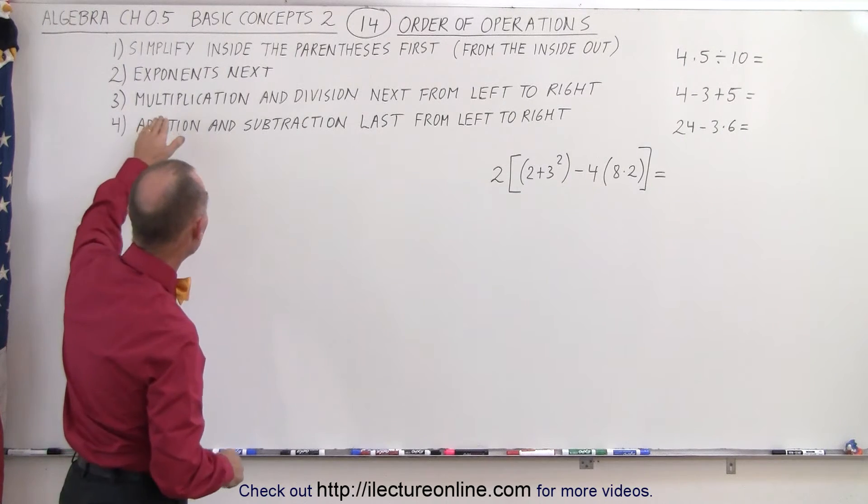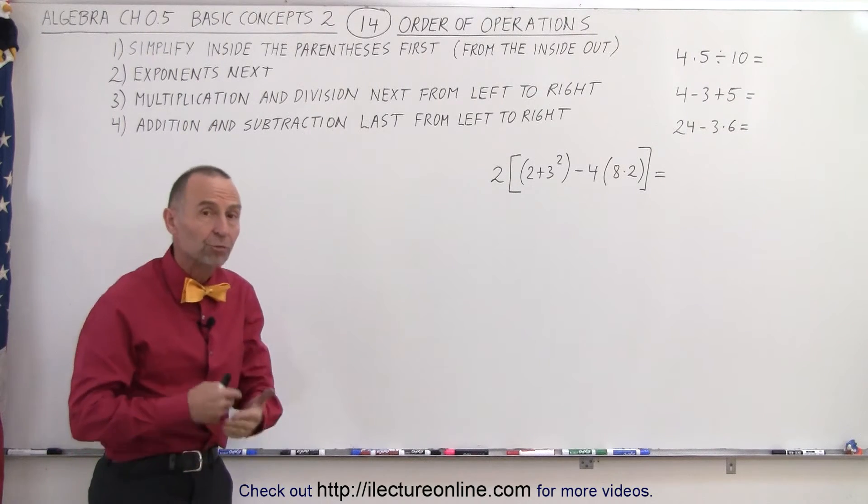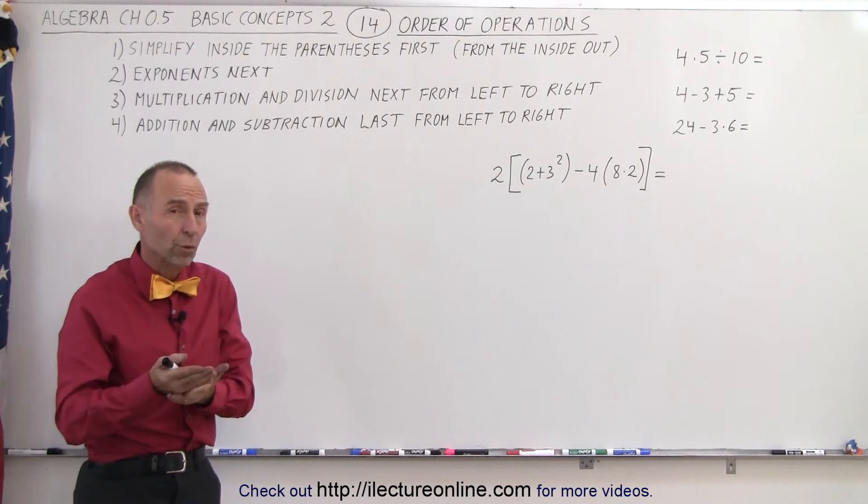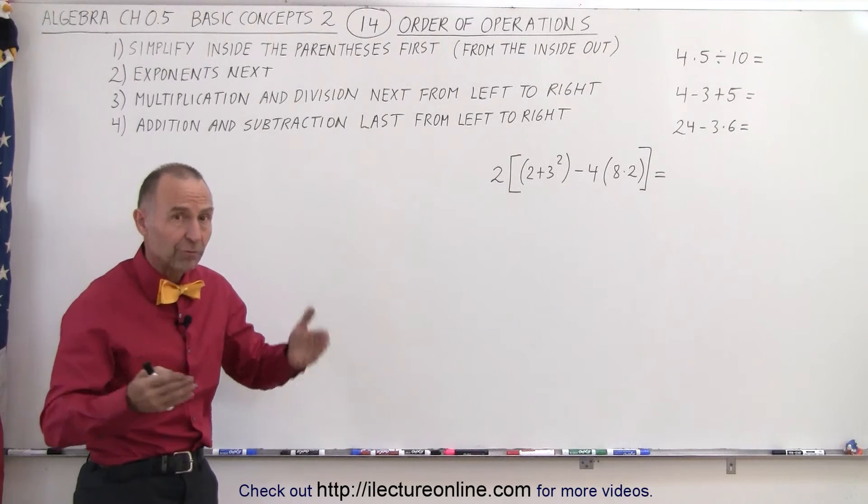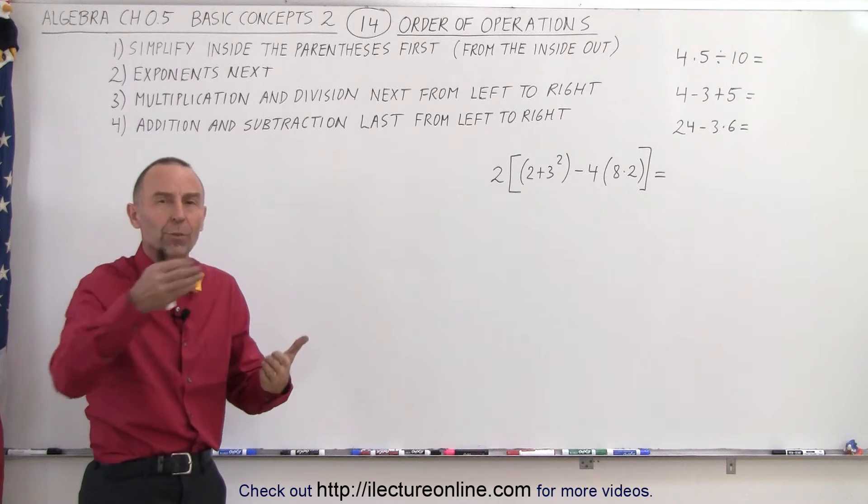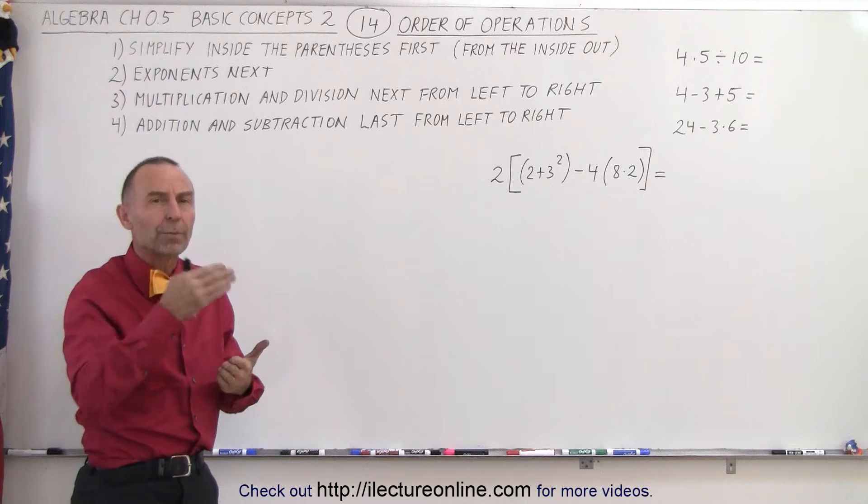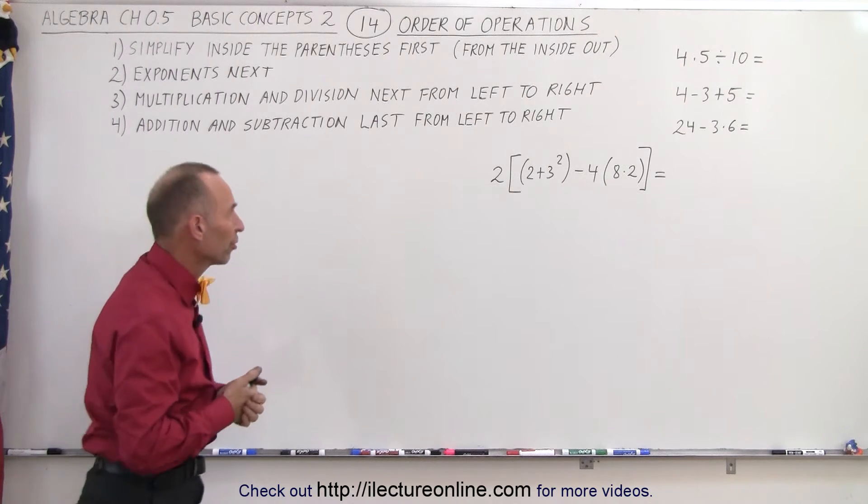After that, multiplication and division from left to right. For example, if there's more than one multiplication or division or a mixture of multiplication and division, we do the one on the left side before we do the one on the right side. So we work from left to right when we take prioritization in which multiplications and which divisions to do first.